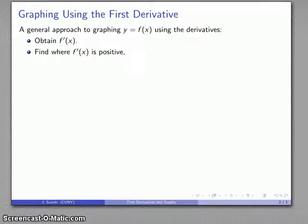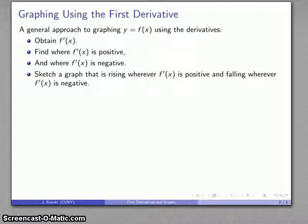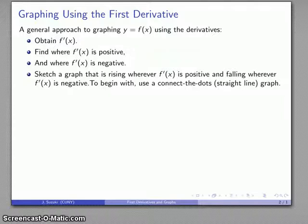Find where the derivative is positive or negative. We want to sketch a graph that corresponds to a graph that's rising whenever we have a positive derivative and falling whenever we have a negative derivative. To produce our first sketch we'll just use a connect the dots straight line graph. Later on we'll refine our graph using higher derivatives.